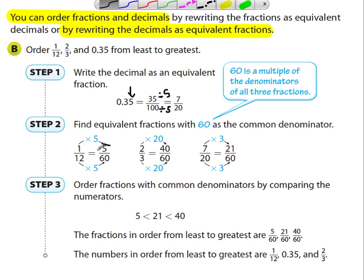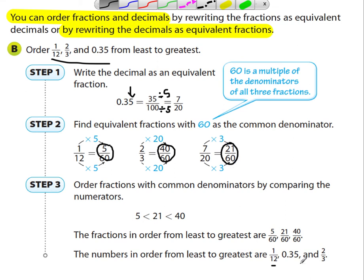Now I have all these equivalent fractions and I can put them in order. The one with the smallest numerator is the smallest. Order the fractions with common denominators by comparing the numerators. Five is smallest, twenty-one is next, and forty is the biggest. So the fractions in order from least to greatest are five-sixtieths, twenty-one sixtieths, and forty-sixtieths. Going back to original numbers: one-twelfth is the five-sixtieths — smallest. Seven-twentieths is twenty-one sixtieths — the middle one — which was thirty-five hundredths. And two-thirds was forty-sixtieths, which is the largest.